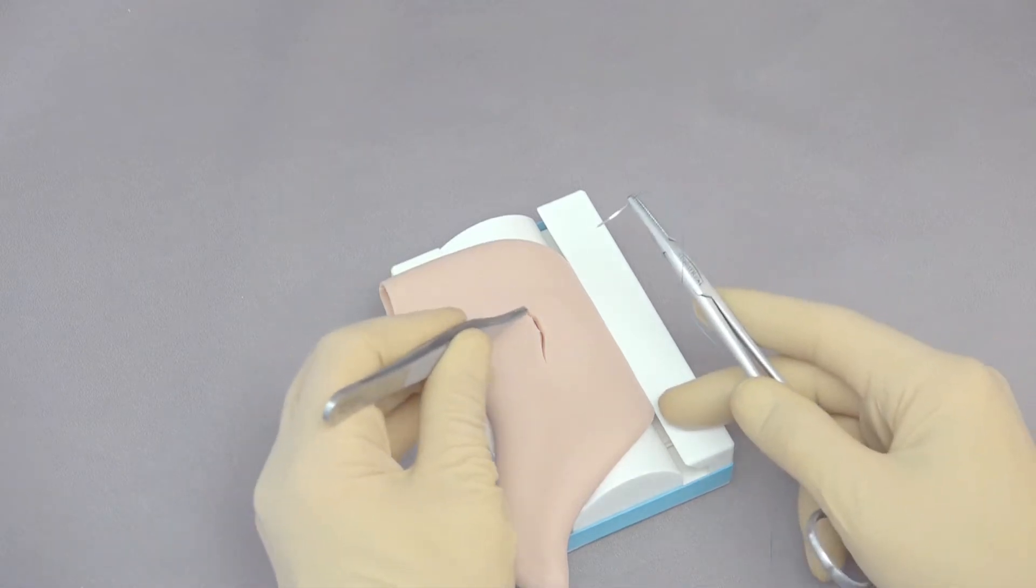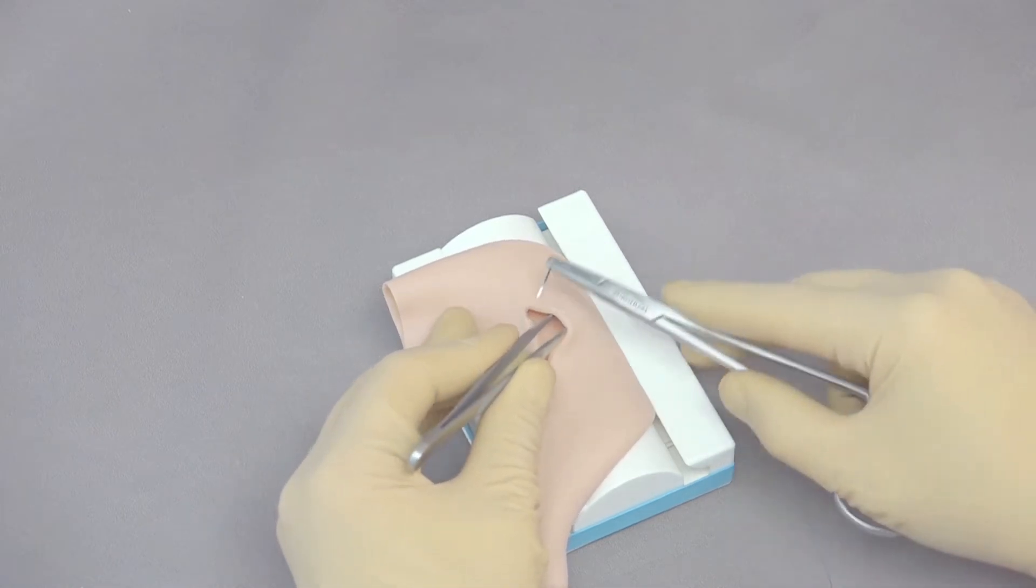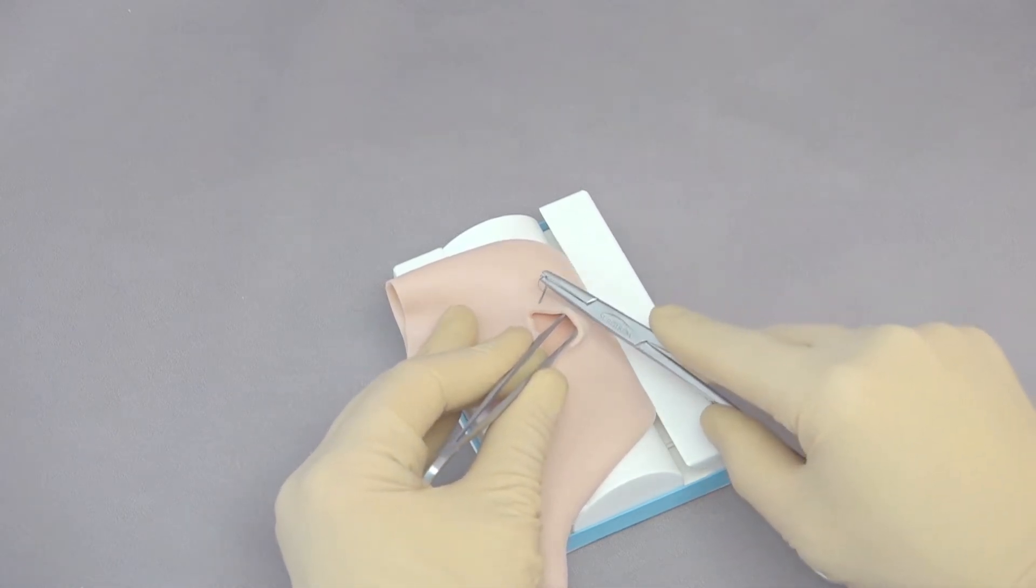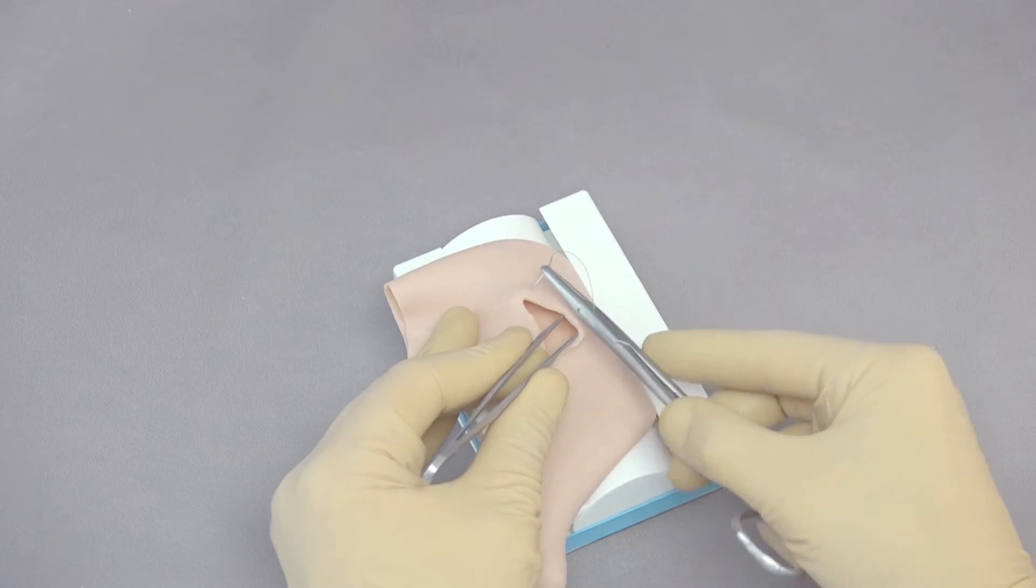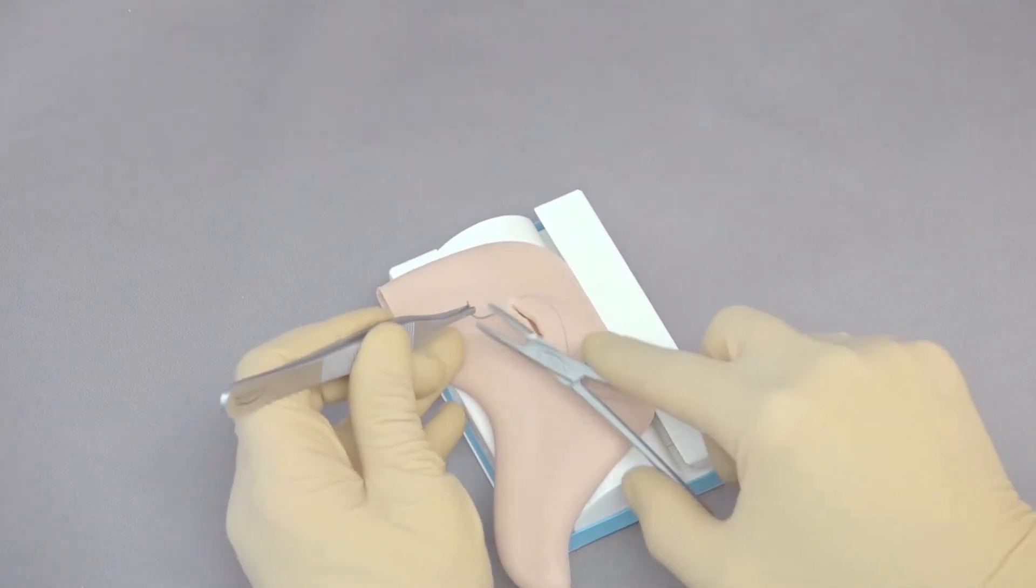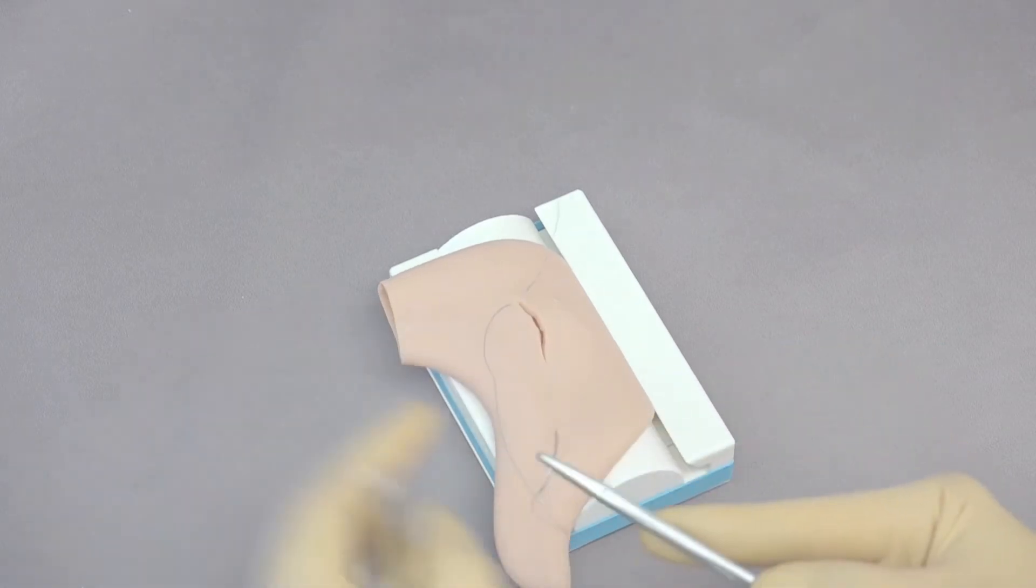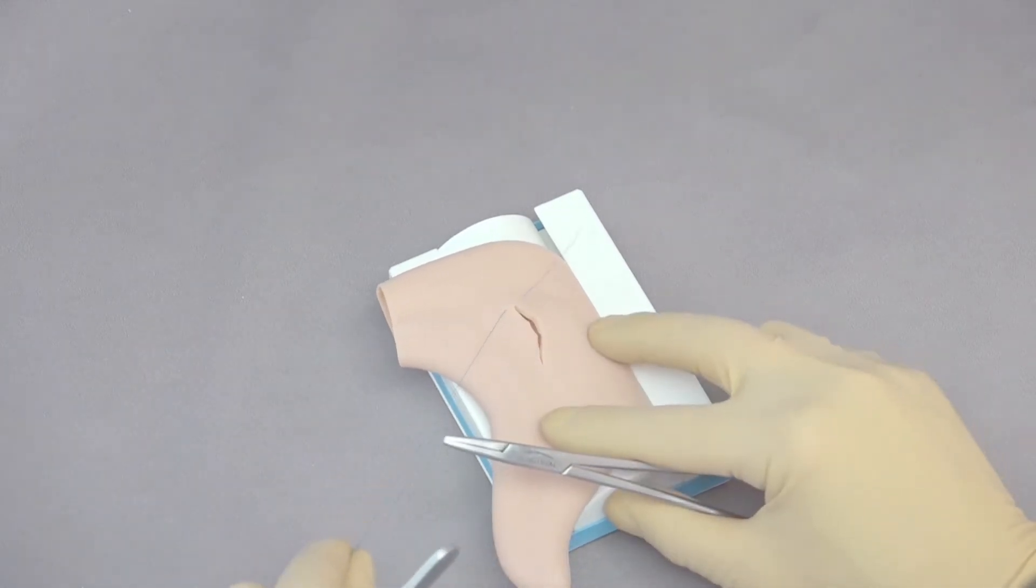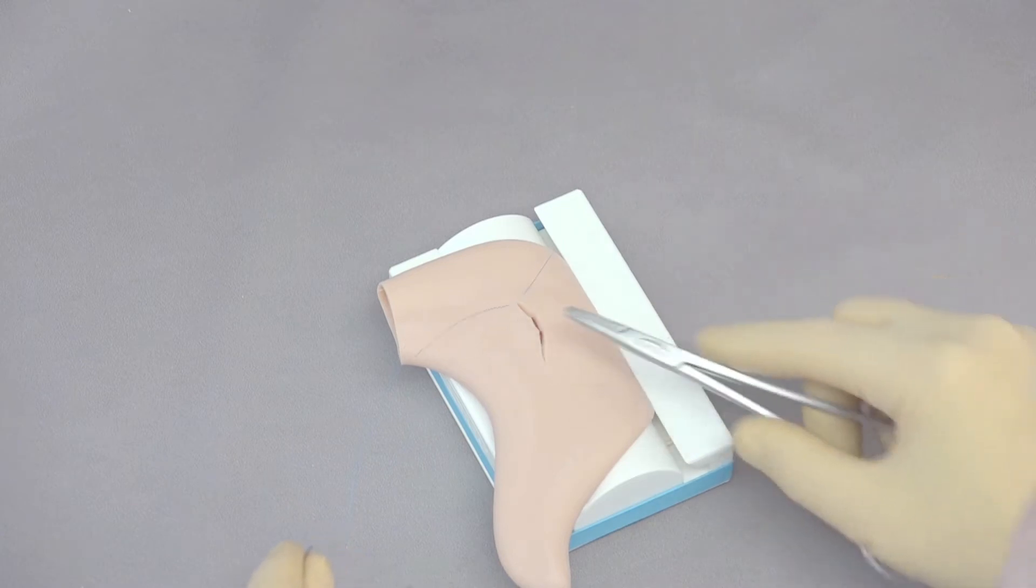The best way to do that is to put your thumb forceps inside to stabilize. Go just past the incision in the stomach, and make your first suture bite. By going past the incision in this case, it's going to stabilize the stomach a little bit better, and make sure that we've got a good closure.